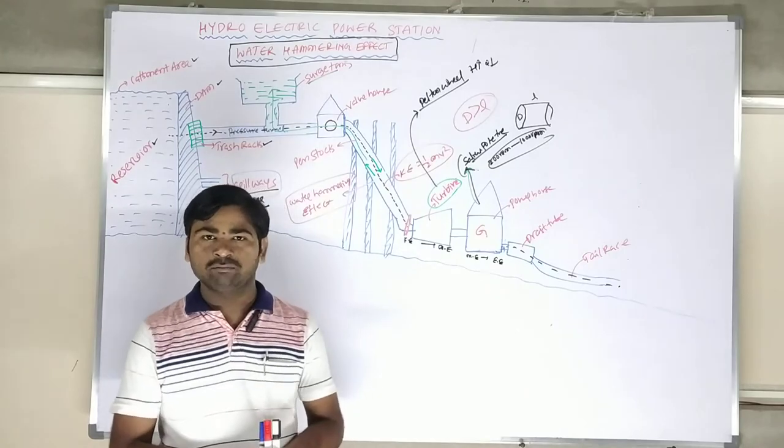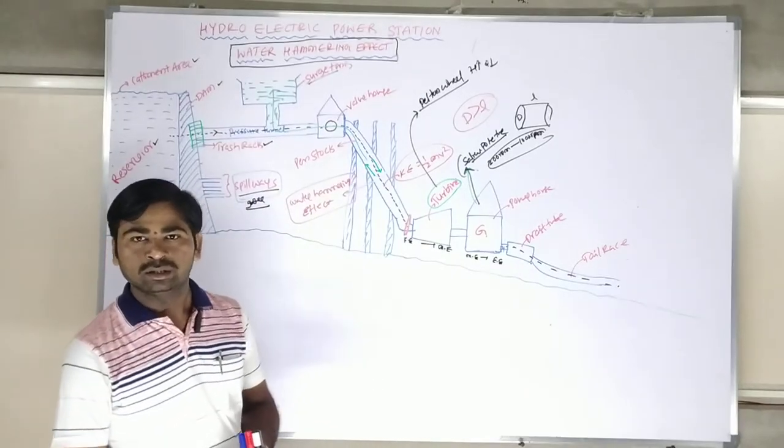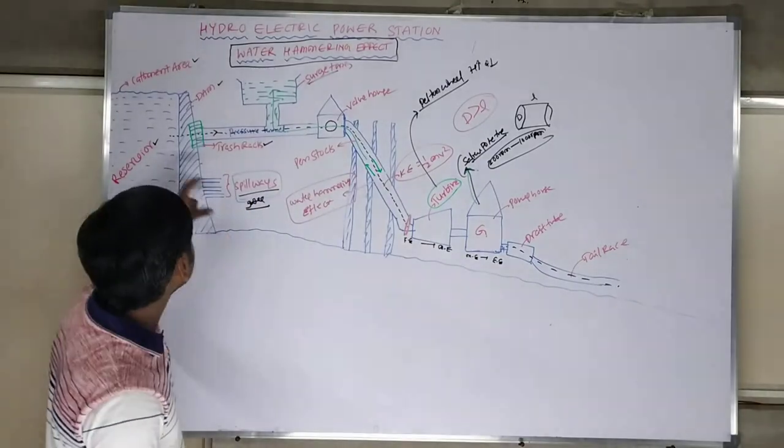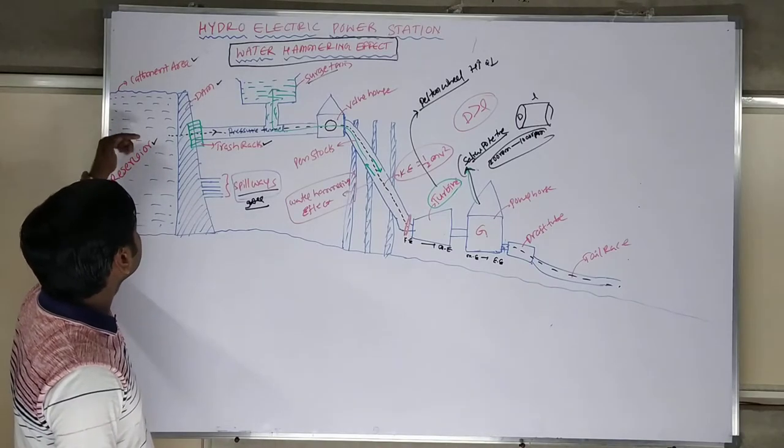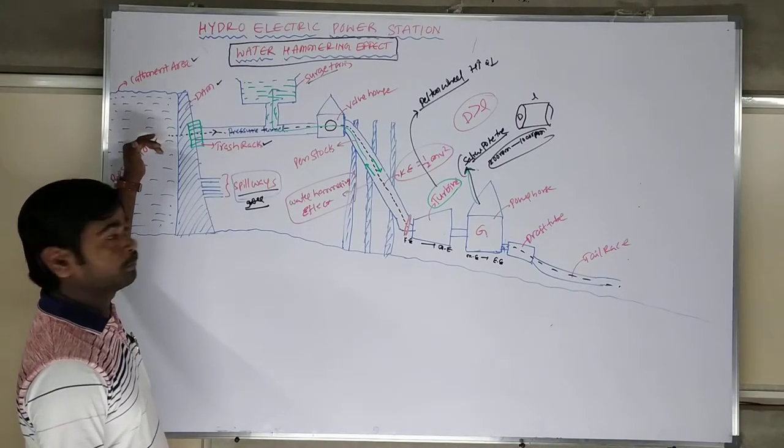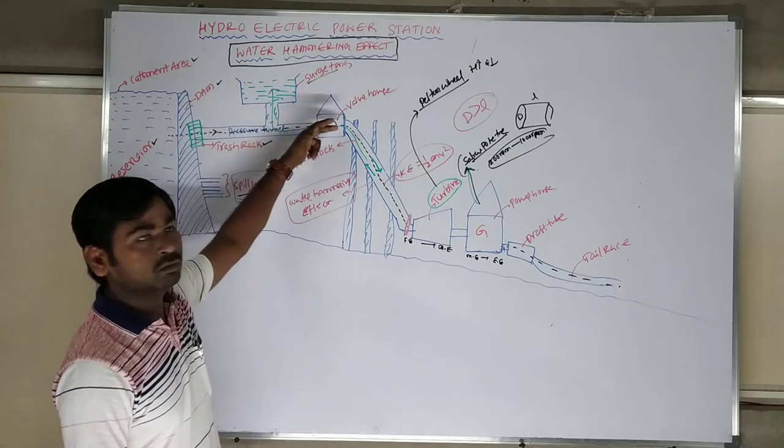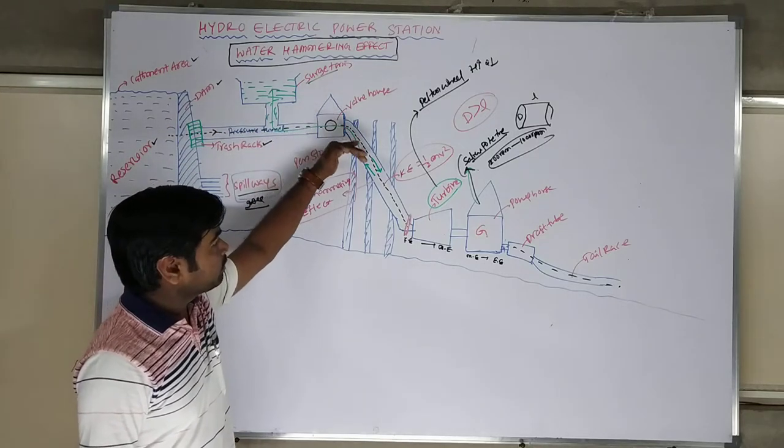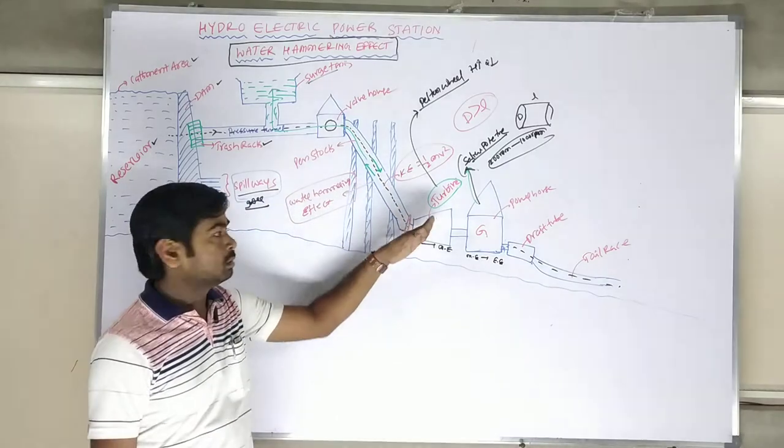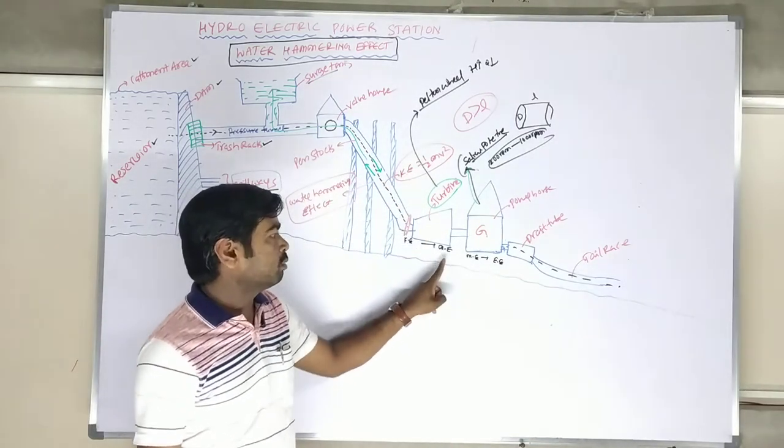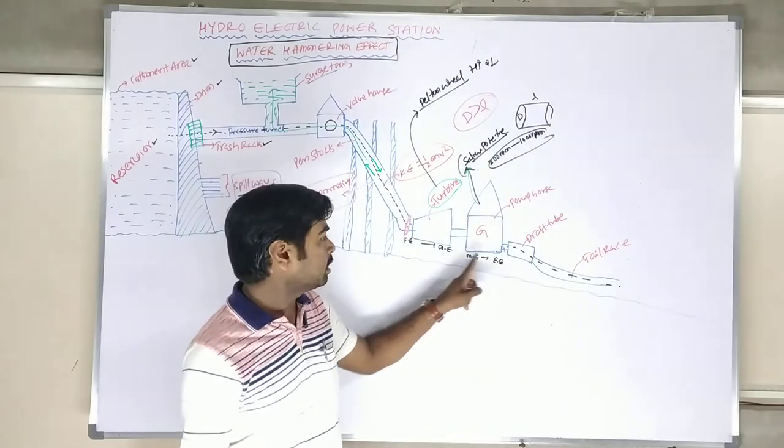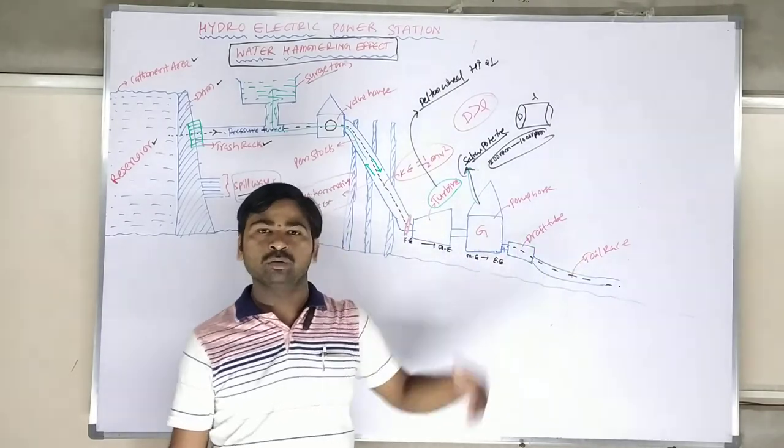What you understand by water hammer effect is the following. Generally, water flows through the dam, through the pressure channel, and into the penstock. Through the penstock, the water hits the turbine. The turbine converts kinetic energy to mechanical, then mechanical to electrical energy. The potential energy created by the dam is converted into electrical energy through this process.